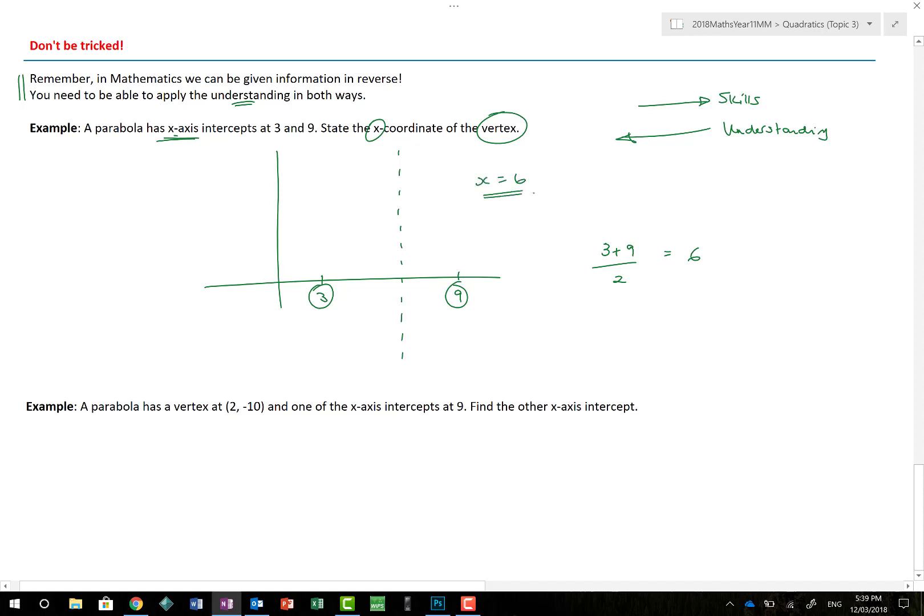Now, the great thing is, you can't actually find the y-coordinate. Why? Well, they haven't given you any information. They haven't given you that y equals anything. Yes, I could write this as x minus 3, x minus 9, for example, is equal to 0. But I don't know whether my parabola has been given any form of dilation. So, I've actually only got sort of half the information that's useful.